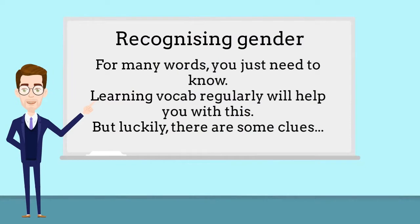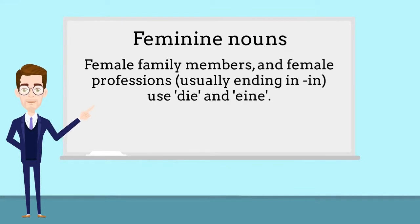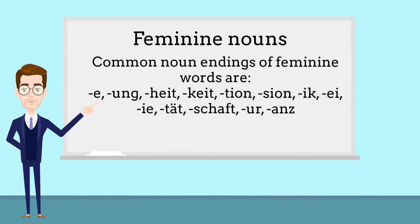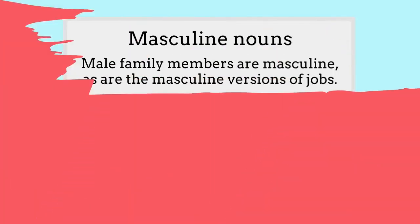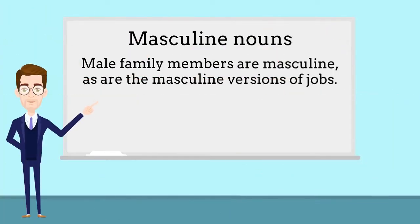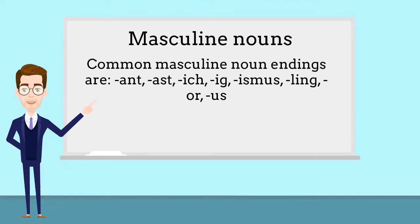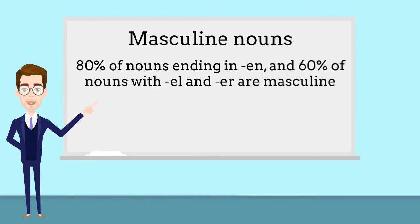Often you do just need to know the gender of the word, but there are some clues in German that can help you. Female family members such as meine Schwester, and female professions such as die Ärztin, are feminine words. These are some common noun endings for feminine words in German. Male family members such as der Bruder, and male versions of professions such as der Arzt, are masculine. And these are some common noun endings for masculine words — look out for these noun endings too, which are often masculine nouns.